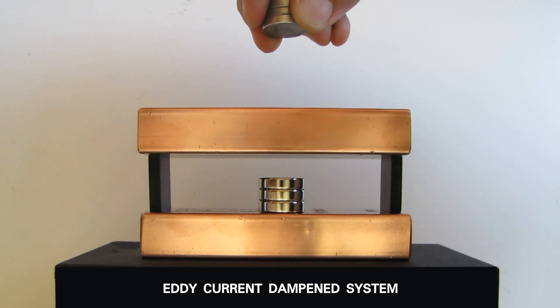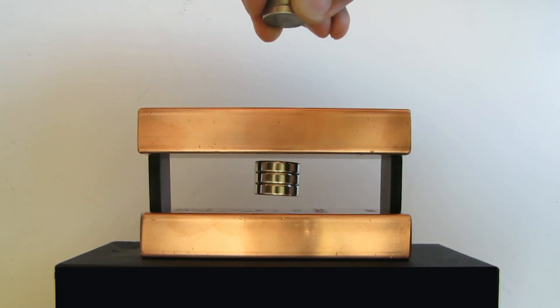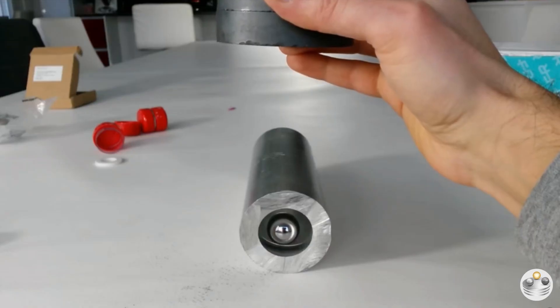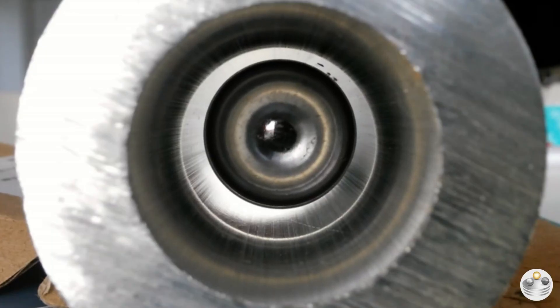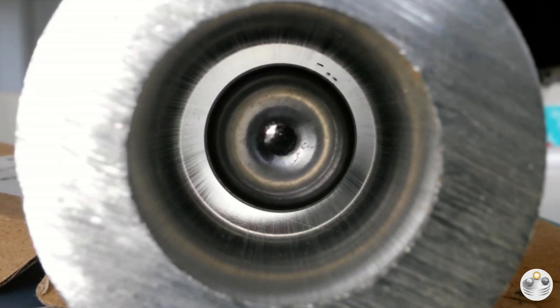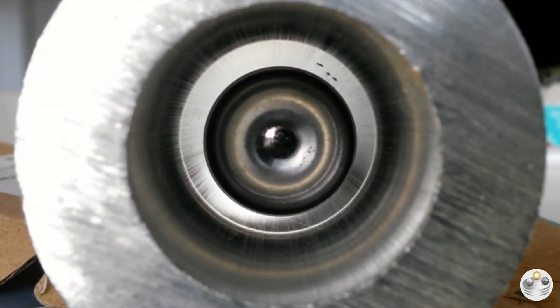It is possible to levitate a magnet in proximity of a conductive material like copper or aluminum by manually adjusting another magnet above. The levitation is made possible by eddy currents. Those currents produce their own magnetic field that resists movement of the magnet. This dampens the system, slowing the movement of the suspended magnet.